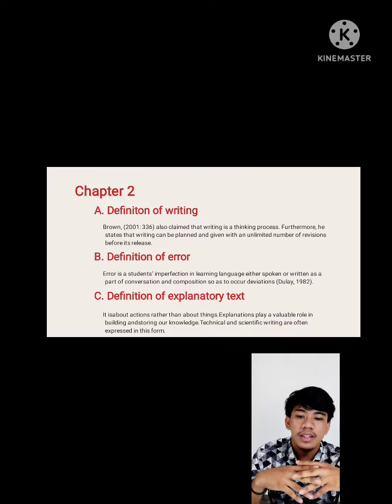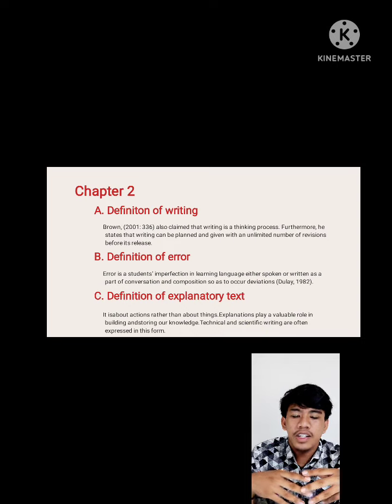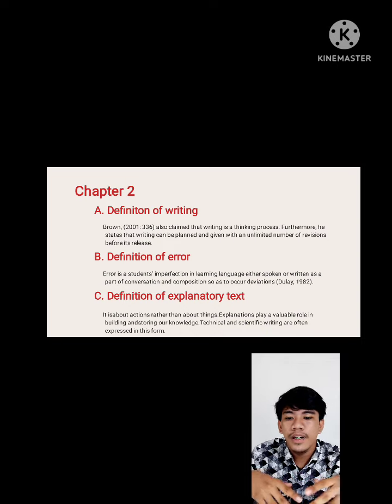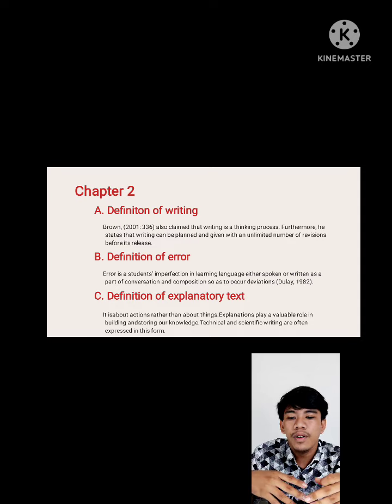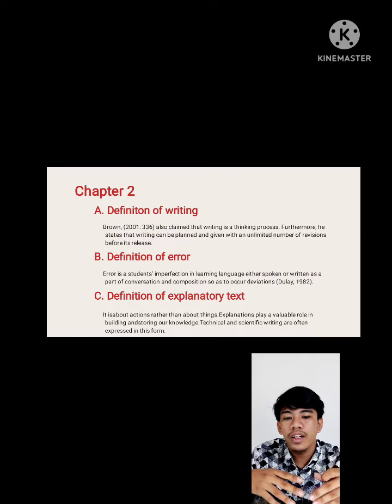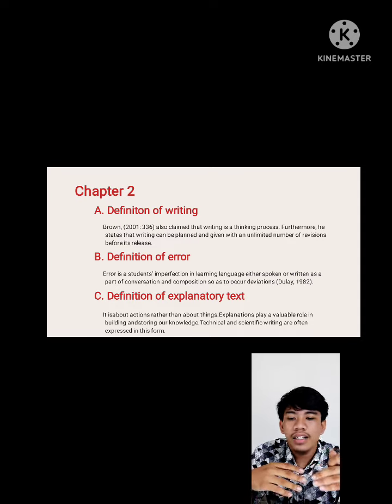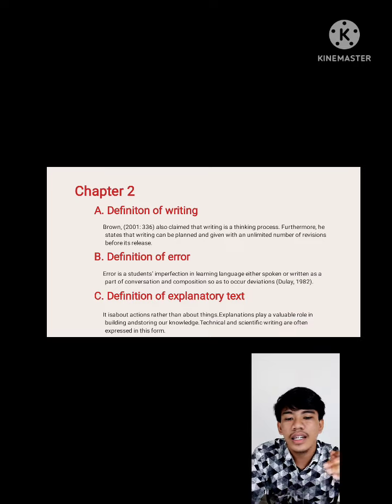The last material in chapter 2 is definition of explanatory text. Explanatory text is written to explain how and why something in the world happens. It is about actions rather than about things. Explanatory text plays a valuable role in building and storing our